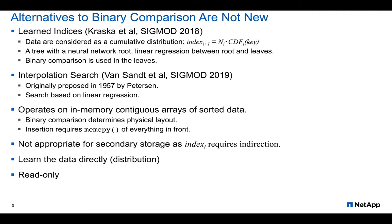A couple of things these approaches have in common: they both operate on data that's sorted and in memory, so again binary comparison is determining the physical layout of the data. Inserting in this world requires mem-copying everything in front of the insertion point, which can be expensive. For indexing secondary storage this doesn't work very well because the index requires indirection, since that is a logical address not a physical address, and both of these approaches are believed to be read-only.